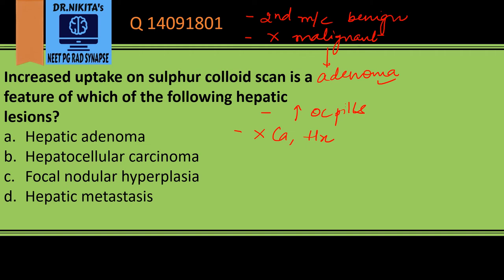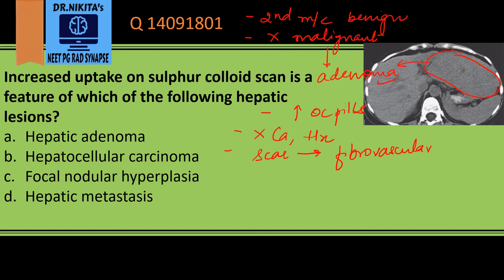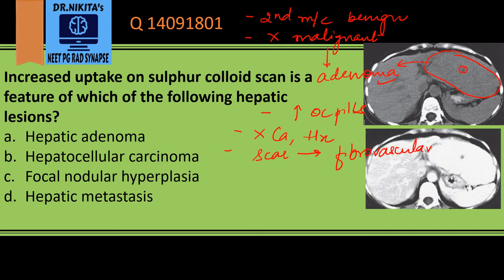FNH shows a central scar, which is a fibrovascular scar. Looking at the CT image now, this is a lesion that looks the same as liver parenchyma because it contains normal liver elements — it has the same density. In the center we can see a hypodensity, which is the scar.